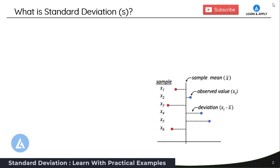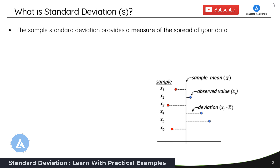Let's first understand what standard deviation is. Standard deviation consists of two important parts: sample standard deviation and population standard deviation. The sample standard deviation provides a measure of spread of your data. Here we have a sample with data points x1, x2, x3, x4, x5, and x6. If we calculate the average of all these data points, it is called the sample mean, indicated by x-bar. The deviation of each value from this mean is called a measure of spread — the difference between the mean and each individual value — and that is nothing but the measure of spread.